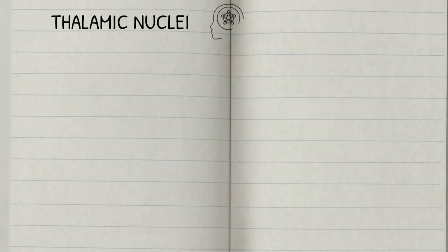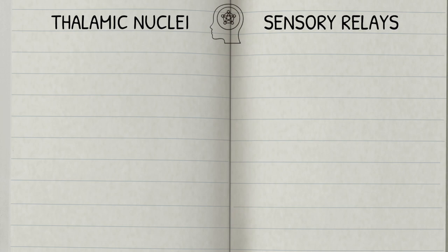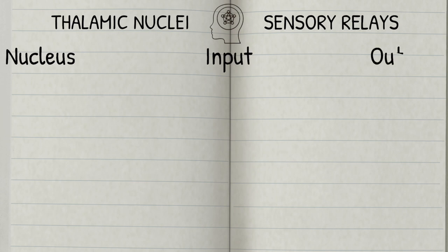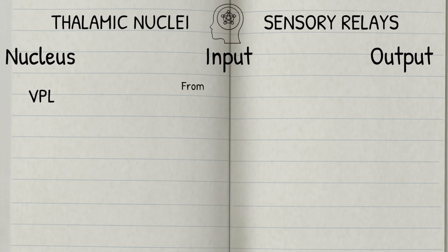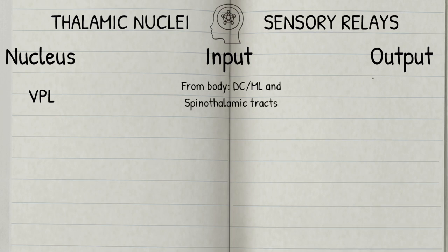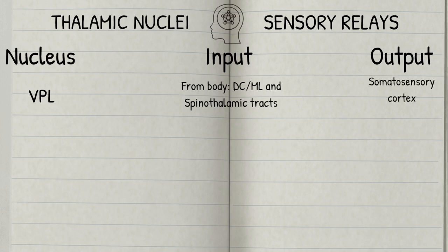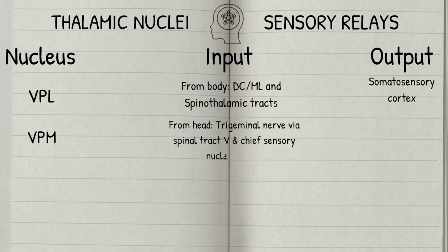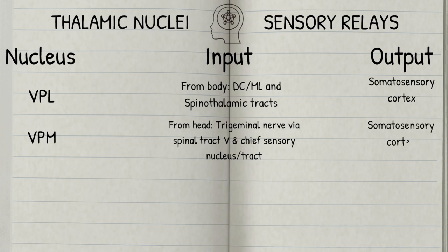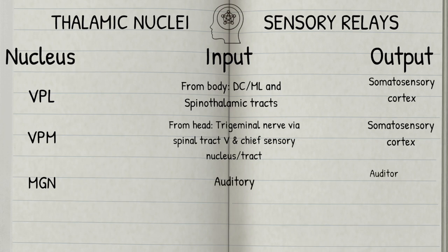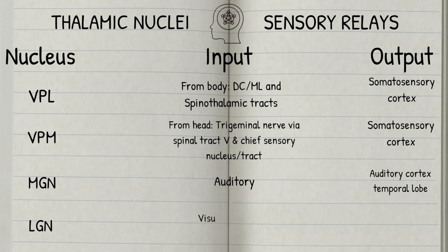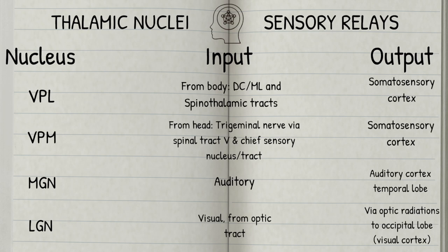Now we are going to move on to describing the inputs and outputs to the various thalamic nuclei, starting with those involved in sensory relay. The VPL receives inputs from the dorsal column medial lemniscus tract and the spinothalamic tract, and it relays outputs to the somatosensory cortex. The VPM receives sensory information from the head through the trigeminal nerve via the chief sensory nucleus or spinal tract 5, with the output also going to the somatosensory cortex. The medial geniculate nucleus receives auditory information via the inferior colliculus and sends stimuli to the auditory cortex, which is located within the temporal lobe. Finally, the lateral geniculate nucleus receives visual information from the optic tract, before outputting the information via the optic radiations to the visual cortex, which is located in the occipital lobe.